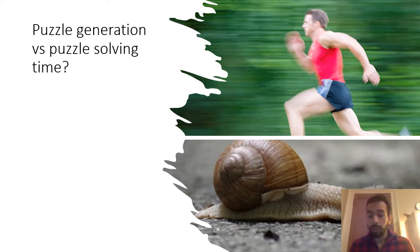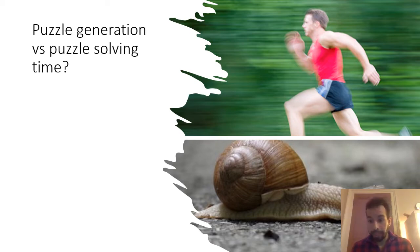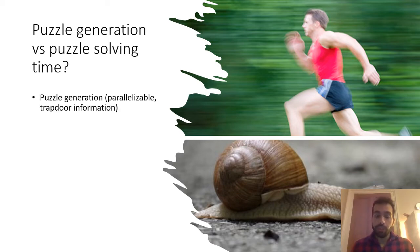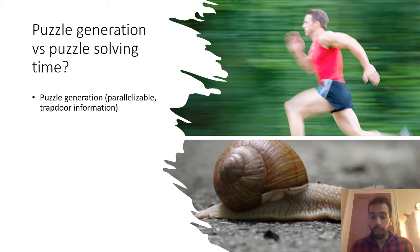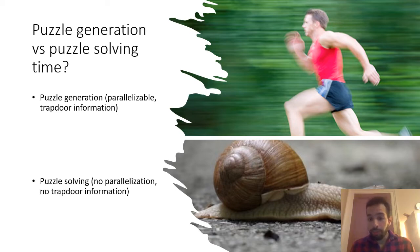Ideally, in the concept of time-lock encryption, we want to create an asymmetry between the puzzle generation time and the puzzle solving time. Ideally, the puzzle generation time should be small and the puzzle solving time should be large. Of course, there are constructions where these two times are equal, but those are not of much interest. The puzzle generation can be done efficiently because computations can be parallelized or there is trapdoor information for speeding up computations. On the other hand, puzzle solving is slower because no parallelization can occur, there is no trapdoor information, or the entities solving the puzzle are not aware of the trapdoor information.